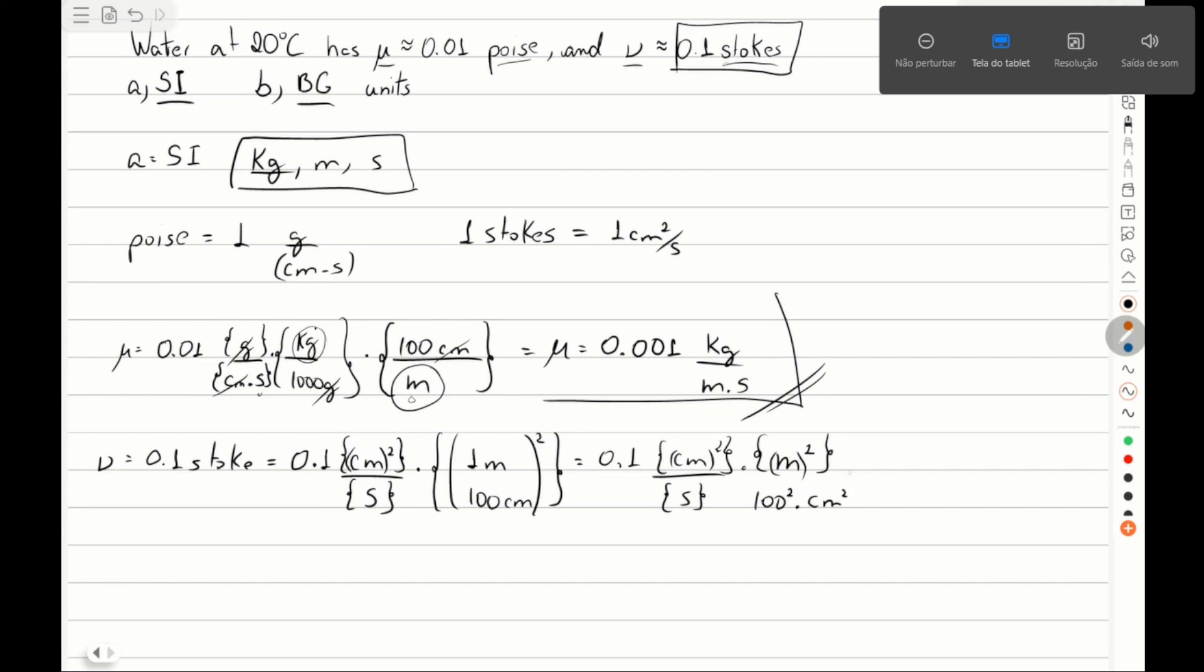Now we can just cancel this, and we know we have to keep meters squared per second divided by one hundred squared.